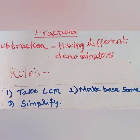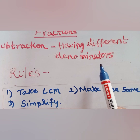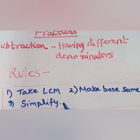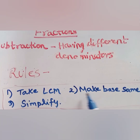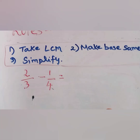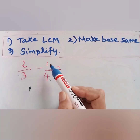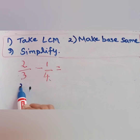Let us take another example of subtraction of fractions having different denominators. We will follow the same rules: first, take the LCM to make the base same; second, make the base same; and third, simplify. The example is 2 by 3 minus 1 by 4. We will take the LCM of 3 and 4.